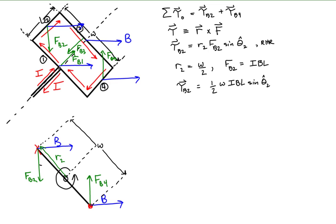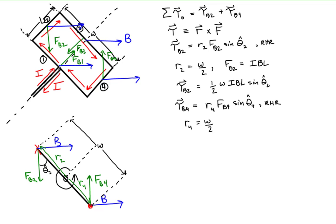Similarly, the torque on segment 4, due to the magnetic force on that segment, equals the distance R4 that segment 4 is from the axis of rotation, times the magnitude of the magnetic force on segment 4, times the sine of the angle θ₄ between R4 and the force on segment 4. R4 equals one-half the width W, and the magnetic force on segment 4 equals IBL, the same as for segment 2.